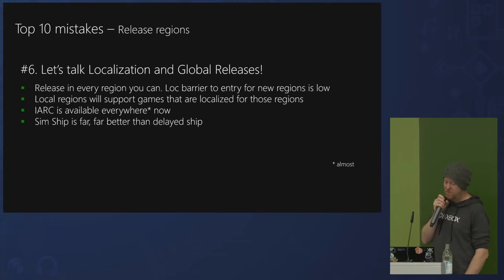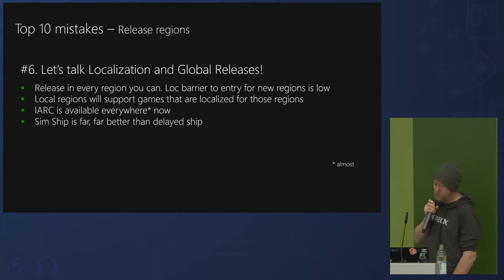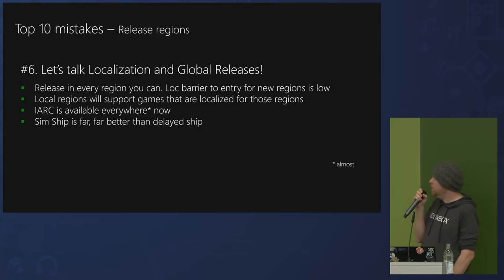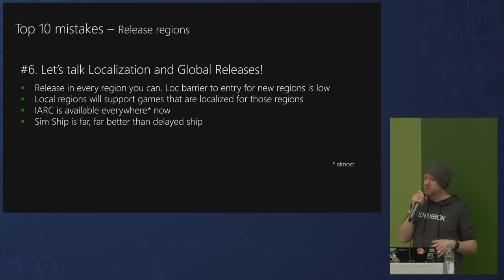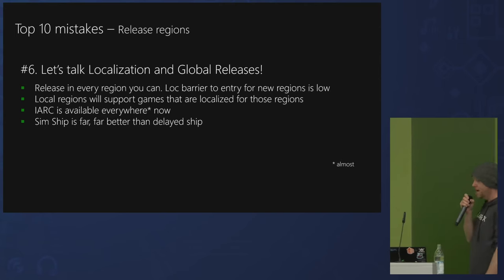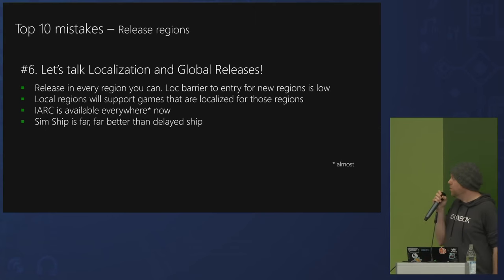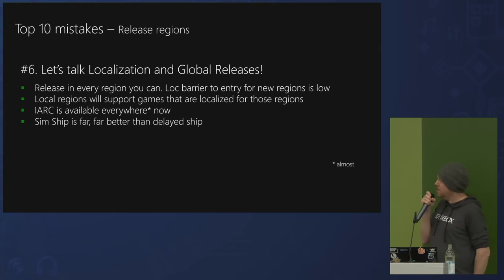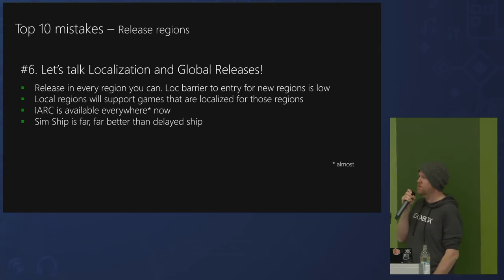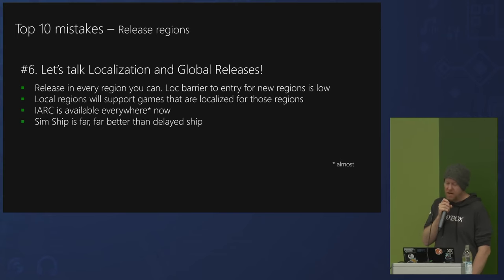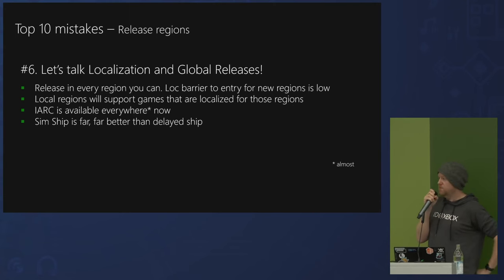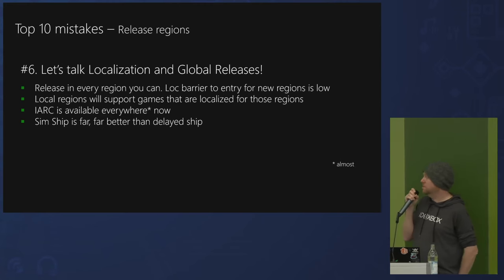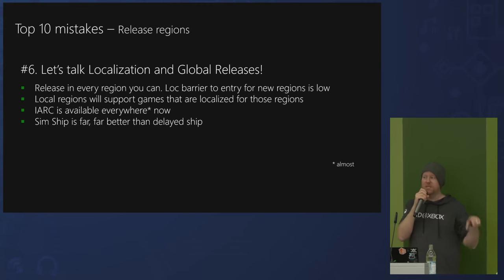Number six: release in every region that you can. The localization barrier to entry is actually really low. You only need to localize the metadata in the store and get an appropriate age rating for each region — you don't need to translate your entire game. Your game could just be in English but you could still launch in 70 territories as long as you translate your metadata. That said, if you can localize your game into lots of different languages, it's always better. Local Microsoft marketing teams will support you if they see a game in their language. IARC ratings are free for almost every region now and it's all self-service. If you want to be in Game Pass, that's also super useful since Game Pass is worldwide.